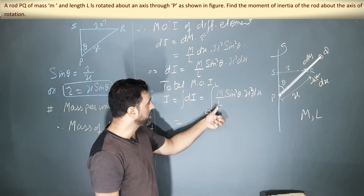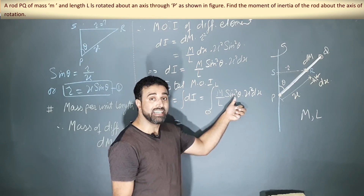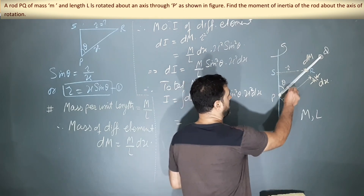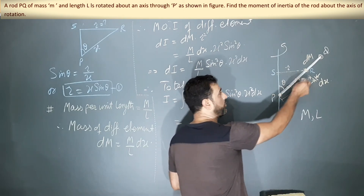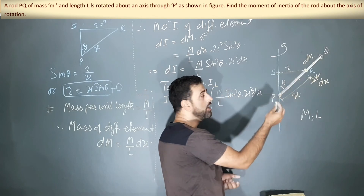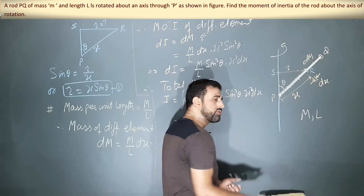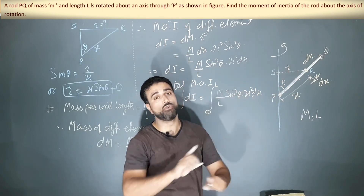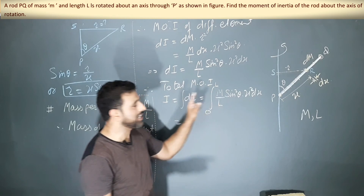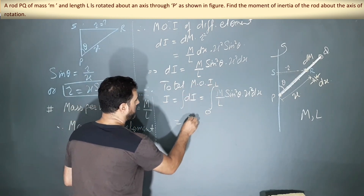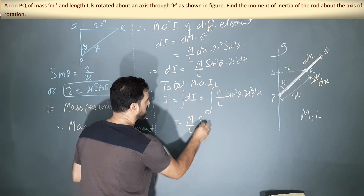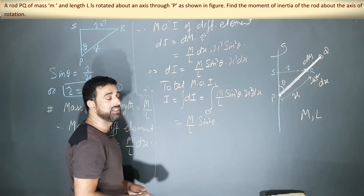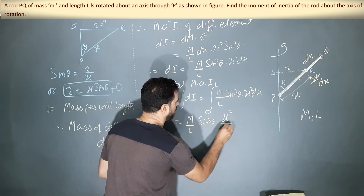Now pull out the constants: M, L, and sin²theta are all constant — theta is the same for every element along the rod. So I = (M/L)·sin²theta · integral from 0 to L of x²·dx. Integrating x² gives x³/3, evaluated from 0 to L.